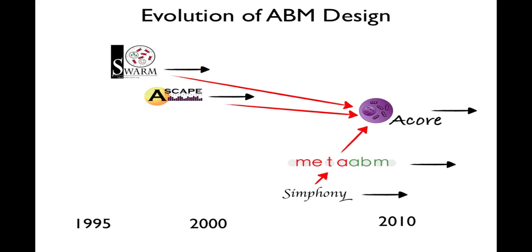The first effort was part of Repast Symfony. After that, I brought out the meta-model aspects into meta-ABM, with the idea of being able to target all sorts of agent modeling platforms, not just Symfony. And then finally, all of this led into the agent modeling platform and into the A-Core meta-model, which we'll talk about.